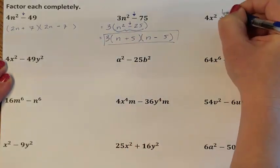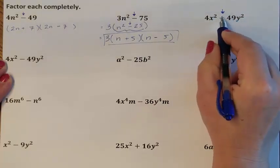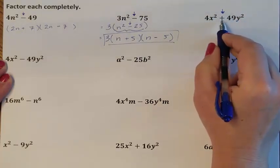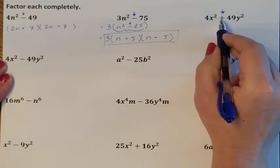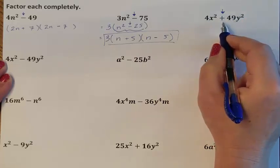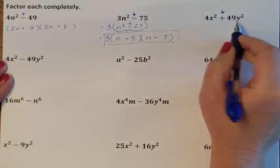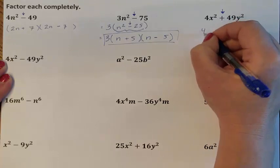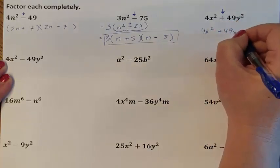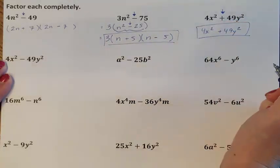This is a plus problem. I do not care what these values are because the plus problem automatically tells you you can't do it — we can only do the difference of two squares. So this problem is fully factored. Your final answer is this one, the original expression, and you're done.